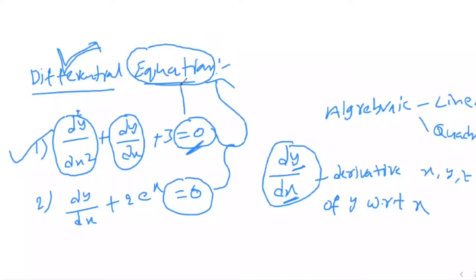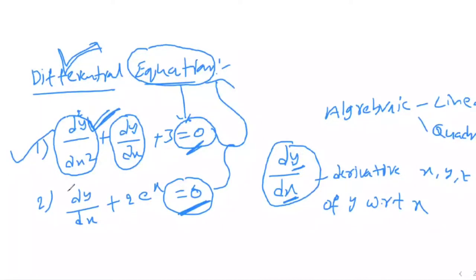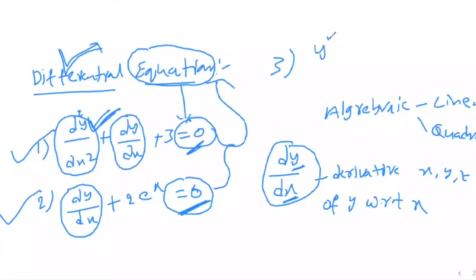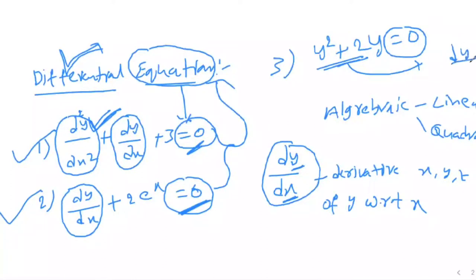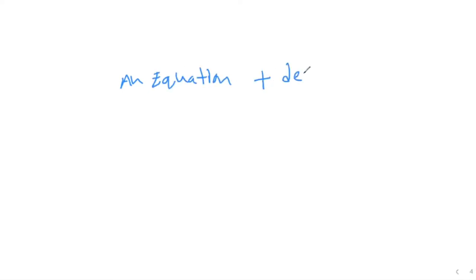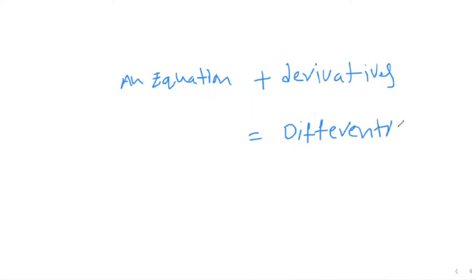The first example is an equation that contains derivative components, so we can say it is a differential equation. The second one also contains derivative terms, so it is also a differential equation. Now consider y² + 2y = 0 — this is an equation, but it does not contain terms like dy/dx, so this is not a differential equation.